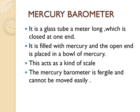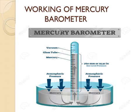The next one is the mercury barometer. It is a glass tube a meter long which is closed at one end, filled with mercury, and the open end is placed in a bowl of mercury. This acts as a kind of scale. The mercury barometer is fragile and cannot be moved easily. The mercury tube is dipped in a bowl filled with mercury. When the pressure of the air increases, it pushes the mercury to get inside the tube, causing the level to rise. From that level they can write down the reading and measure the pressure or weight of the air.